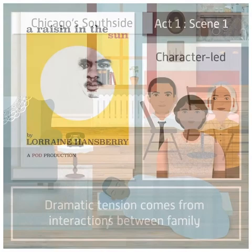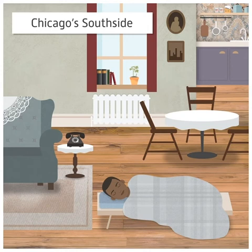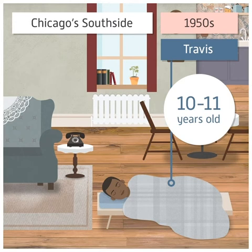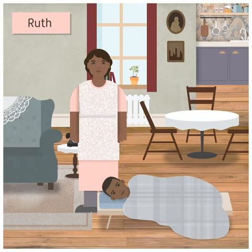The play opens in the living room of a small apartment in Chicago's Southside. It's the 1950s. Asleep on a camp bed is Travis, a young boy of around 10 or 11 years old. From the bedroom emerges Ruth, his mother, who wakes him up and begins to go about her daily routine.